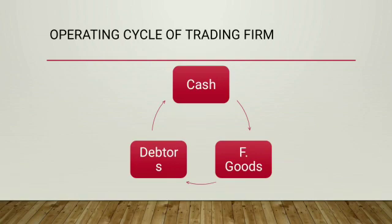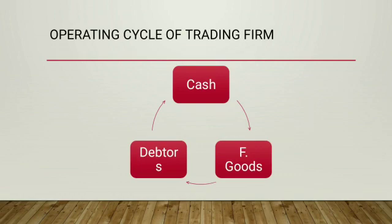The operating cycle of a trading firm is smaller compared to a manufacturing firm because the trading firm only purchases finished goods and sells them. The trading firm does not manufacture any product, so raw material and WIP are not added. The operating cycle of a trading firm starts from cash, which is converted into finished goods, then into sales and debtors, and finally debtors are converted into cash.